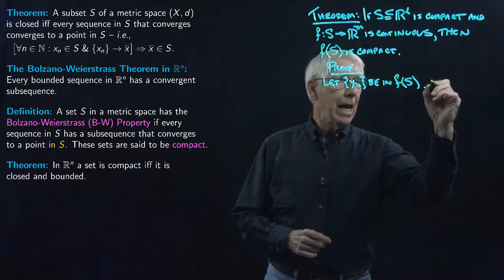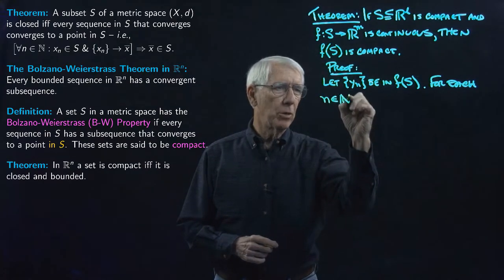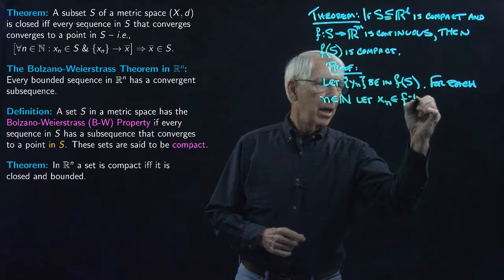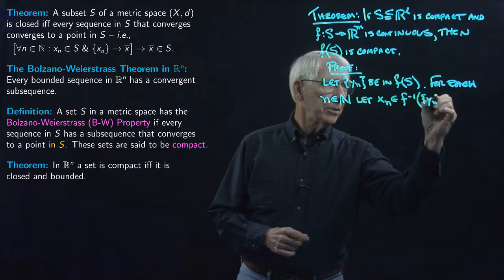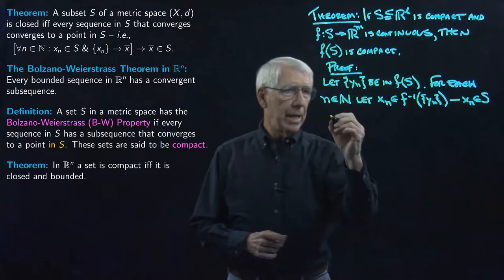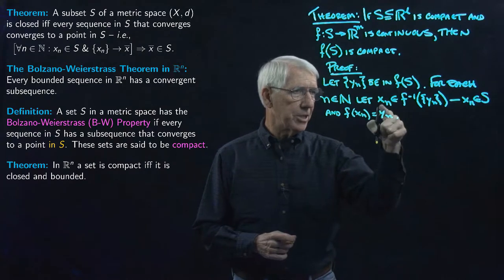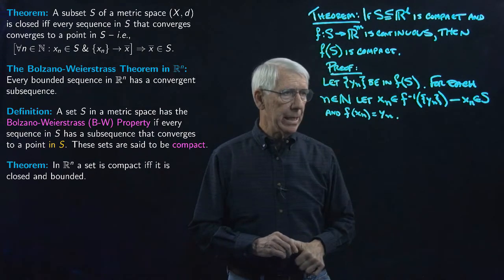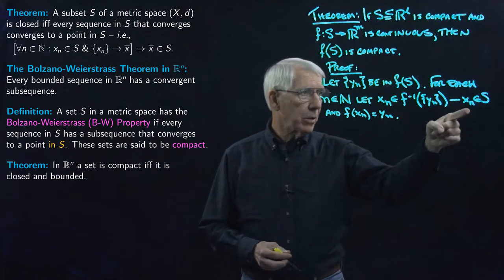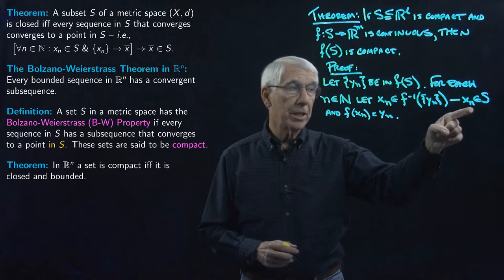For each term of the sequence, let X_N be an element of the pre-image of the singleton set {Y_N}. In other words, X_N is in S and F(X_N) = Y_N — that's what it means to say X_N is in the pre-image of {Y_N}. Now for every N we have an element of S, so that's a sequence in S. S is compact, so this sequence in S has a convergent subsequence that converges to a point in S.